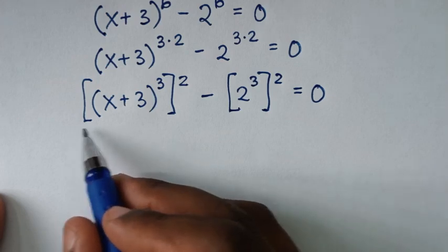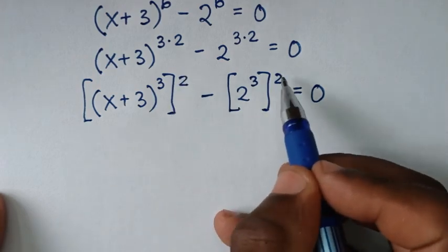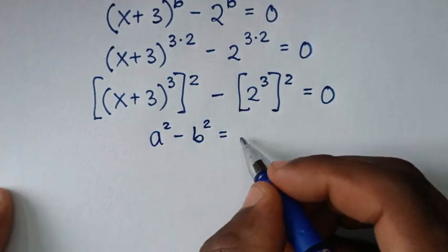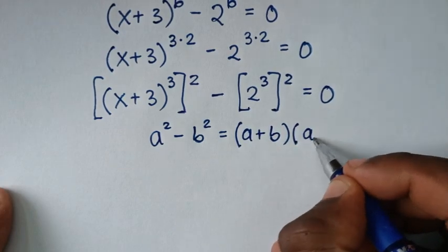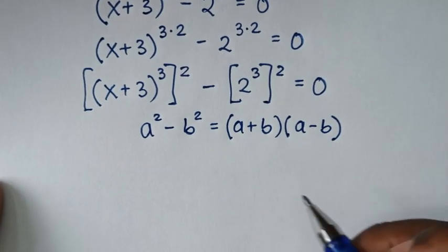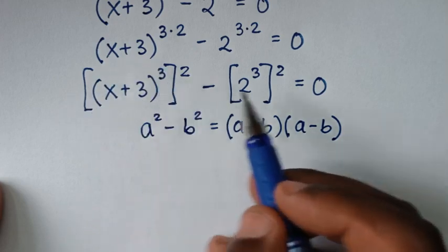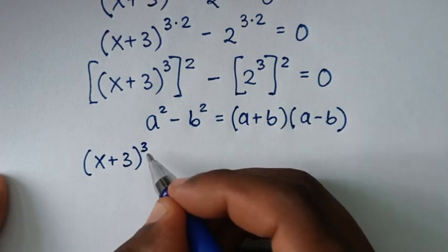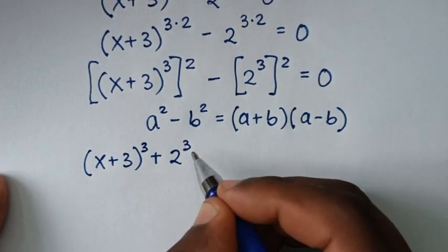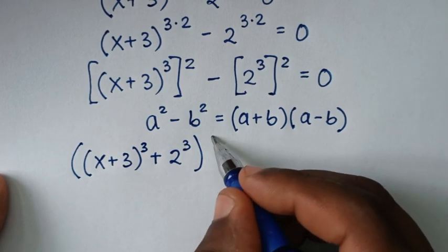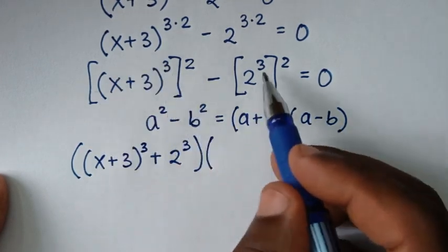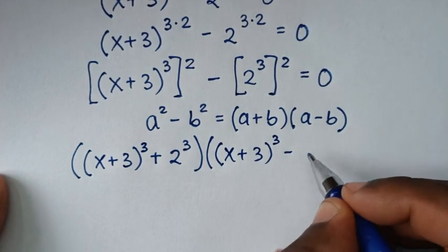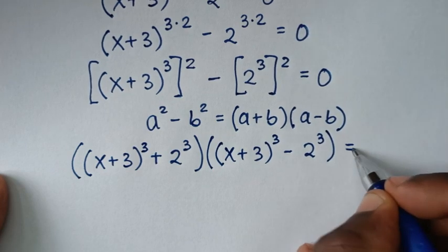From here it is in the form of difference of two squares: a² minus b² equals (a + b)(a − b). So applying this, it will be [(x + 3)^3 + 2^3] times [(x + 3)^3 − 2^3] is equal to 0.